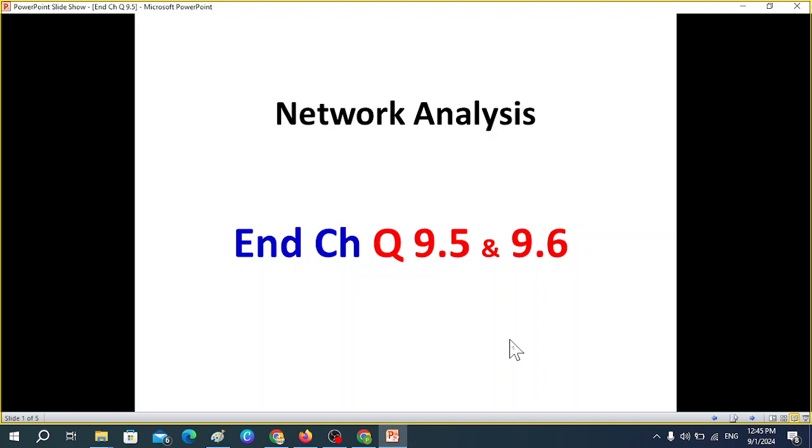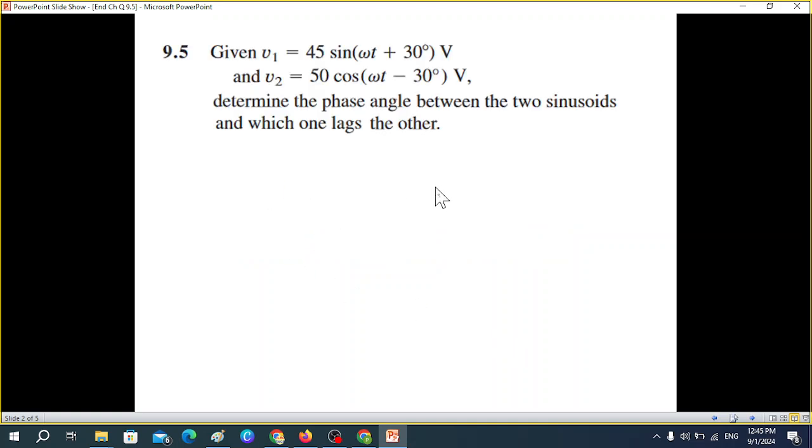From network analysis chapter number nine, questions 9.5 and 9.6. Question 9.5: given signals v1 and v2, one in sine form and one in cosine form, determine the phase angle between the two and which one lags the other.